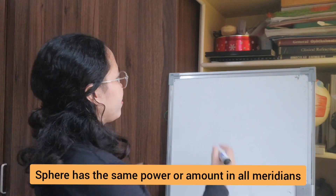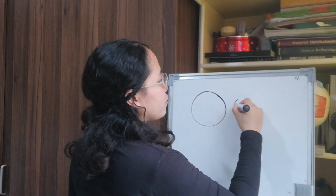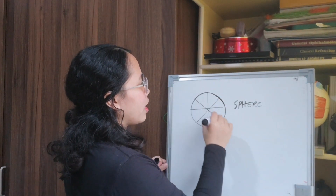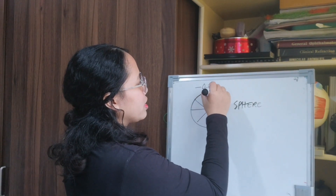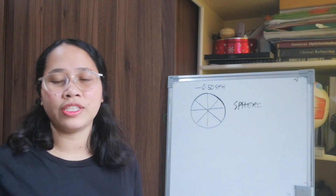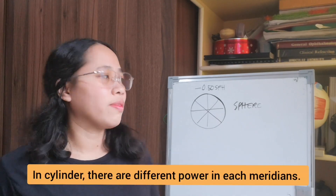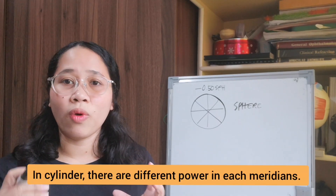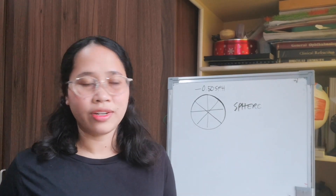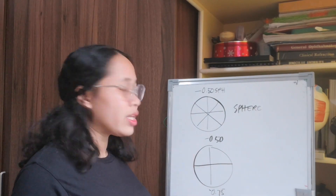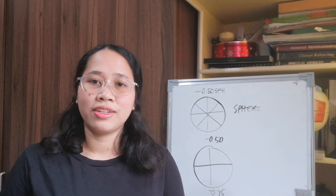When we say sphere, it means that in all meridians of our lens, it has the same power. For example, minus 50 sphere — that is a sphere. But when we say a cylinder, it means that in one meridian it has a different power than the other. So if it has a different power in one of the meridians, that is a cylinder lens.